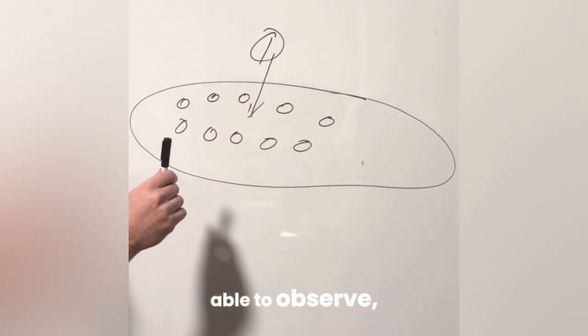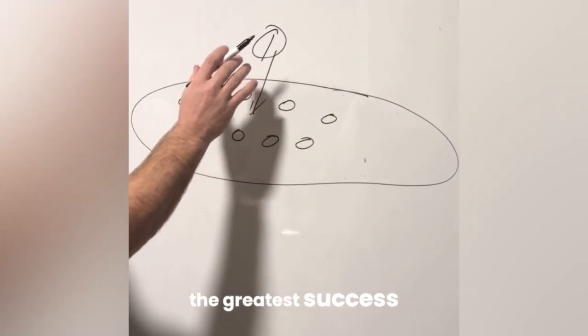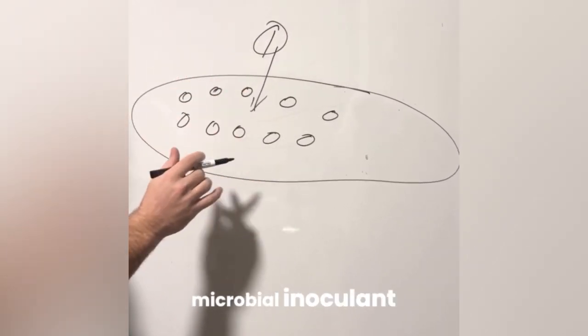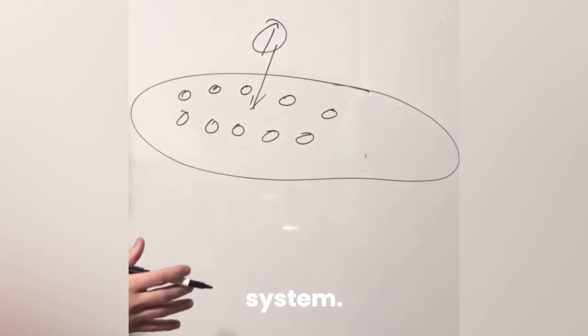From what I've been able to observe, the greatest success occurs when we introduce a microbial inoculant similar to the rhizobium in proximity to a living root system.